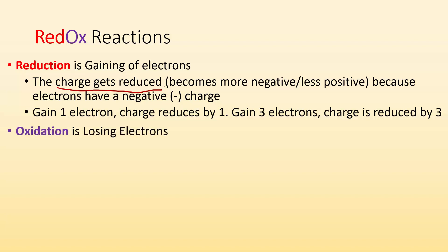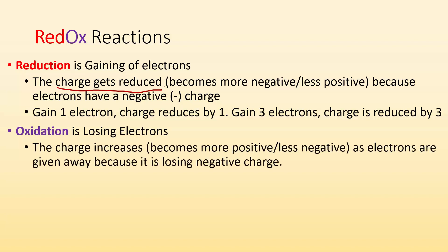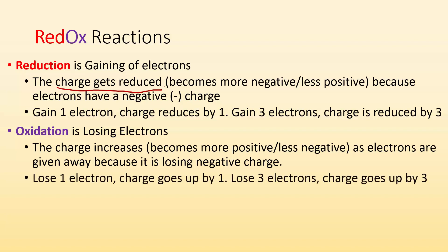The second part of that word is oxidation — the 'ox.' It's losing electrons. So the charge increases, becomes more positive, or becomes less negative — it goes towards positive numbers. As electrons are given away, charge goes up because you're getting rid of negative electrons. You get rid of one electron, charge goes up by one. You lose three electrons, charge goes up by three.